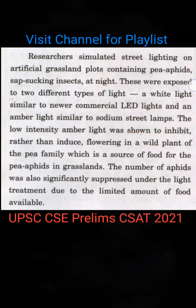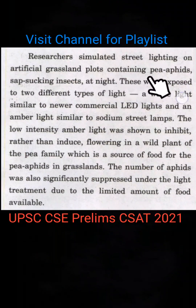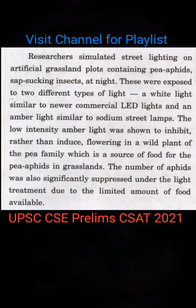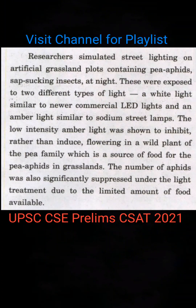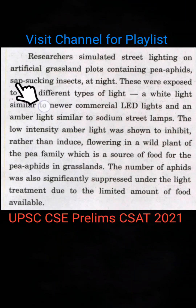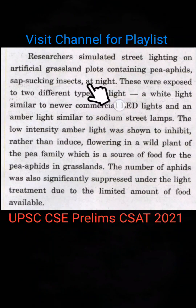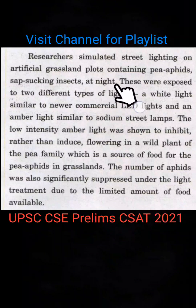Researchers simulated street lighting on artificial grassland plots. They put light on these artificial grassland plots, and there were more insects — sap-sucking insects — and the rest of the birds at night were also present in these plots.